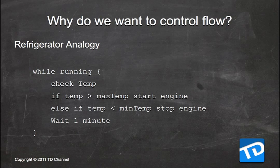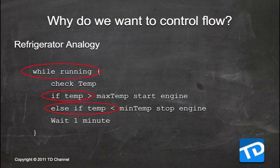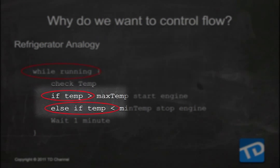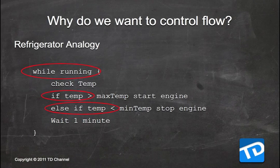So why do we want control flow? Let's go back and look at our refrigerator analogy. If we look at this pseudocode, you'll see that we have several statements here that are actually control flow — so even though we haven't covered it, we've already seen a little bit of it. The top one is an iterator, which allows you to repeat code, and we'll have another video covering iteration. Down here you have more typical control flow statements that allow you to decide what piece of code to run at which time.